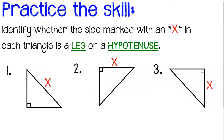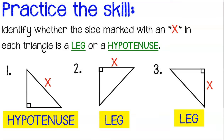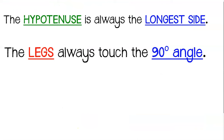The hardest part about using the Pythagorean Theorem is determining whether you're looking at a leg or a hypotenuse. Pause the video and see if you can identify whether X represents a leg or a hypotenuse. Let's take a look and see how you did.